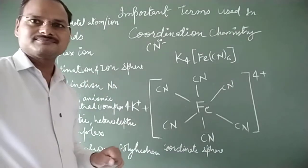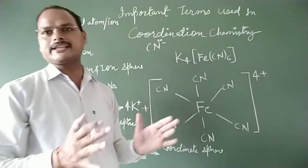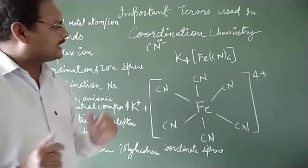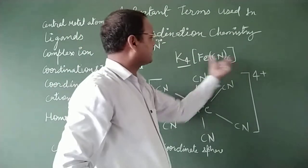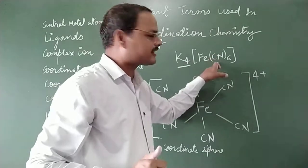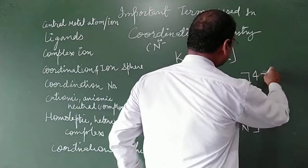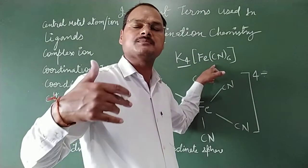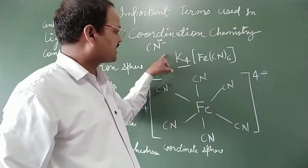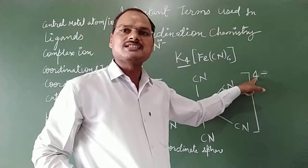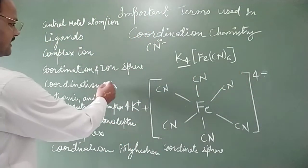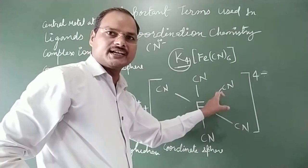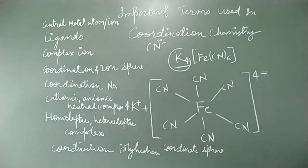The next term is coordination sphere or ionic sphere. The part written within the square bracket is known as the coordination sphere. The other part written outside the bracket — either on the left or right side — is known as the ionic sphere. If the ionic sphere carries a positive charge, the coordination sphere will carry an equal but opposite negative charge. For example, if the outer part has four positive charges, the coordination sphere will have four negative charges.